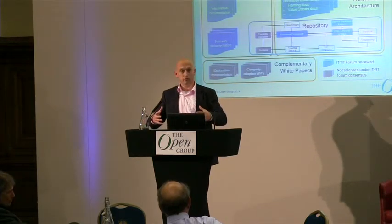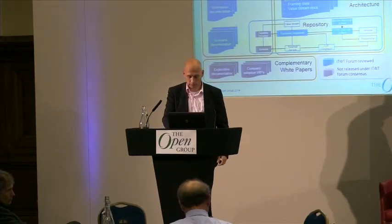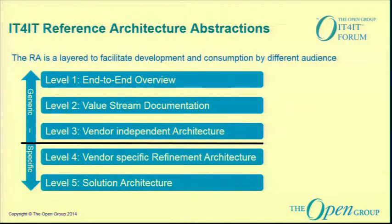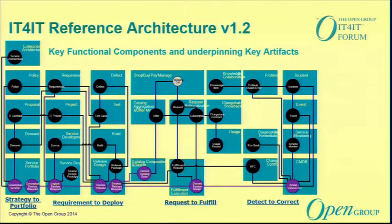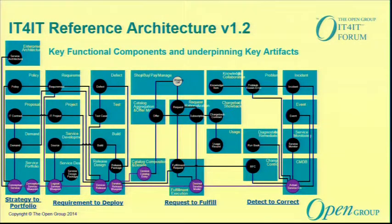We took our own structure of the IT reference architecture and applied it to the scenario. Lars has talked about these levels — I'll stick to a maximum of level three. This is a representation of the reference architecture: the blue boxes are the functional components, the black dots are the artifacts, and the purple dots are the service model backbone. This is really what we bring to the table.